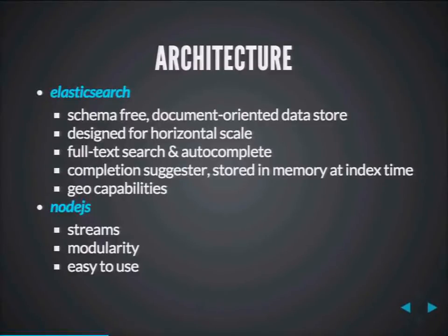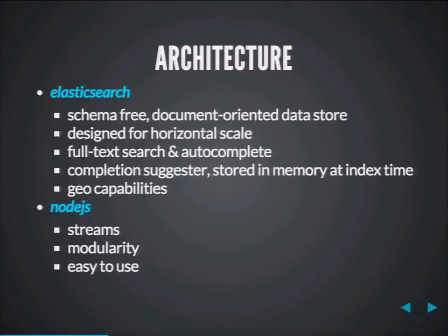We use the Completion Suggester in Elasticsearch, which is stored in memory at index time. Since it's in memory, you can theoretically handle a large load and it should still perform well. We use Node.js — and a bit of history: Randy wrote the first version of Pellius in Ruby, which was presented at State of the Map in DC last year. We moved away from Ruby and rewrote most of it in Node.js because streams — like Unix pipes — make it easy to handle reading and writing to slow interfaces, and the entry barrier for the community to contribute in JavaScript is fairly low.